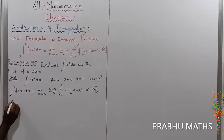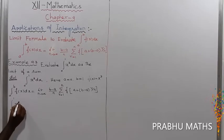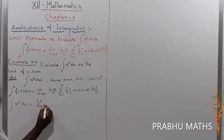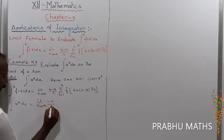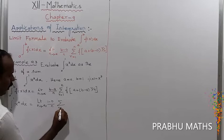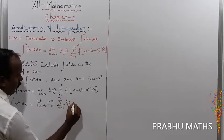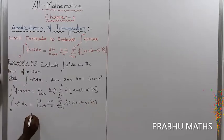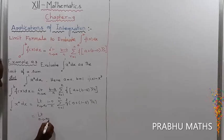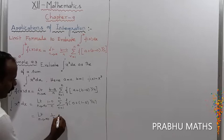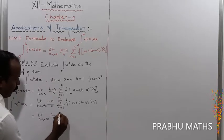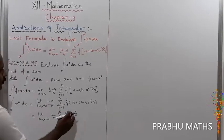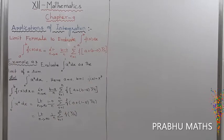Substituting into the formula: the integral from 0 to 1 of x³ dx equals limit as n tends to infinity of (1 minus 0) divided by n, times the summation for r from 1 to n of f of (0 plus (1 minus 0) times r by n). This simplifies to limit n tends to infinity of 1 by n, times summation of f of r by n.